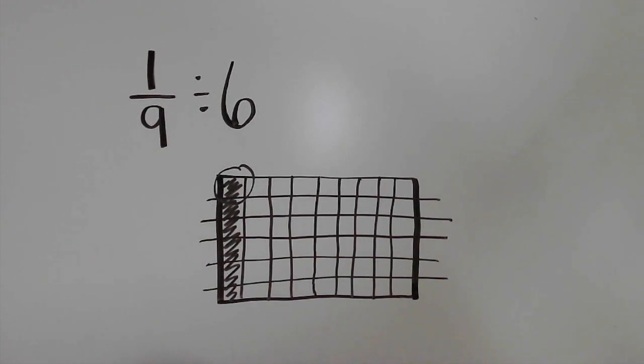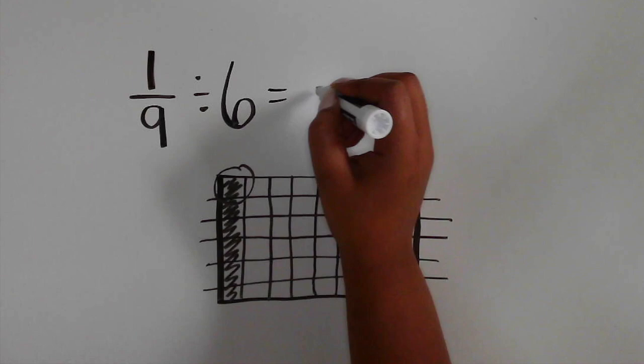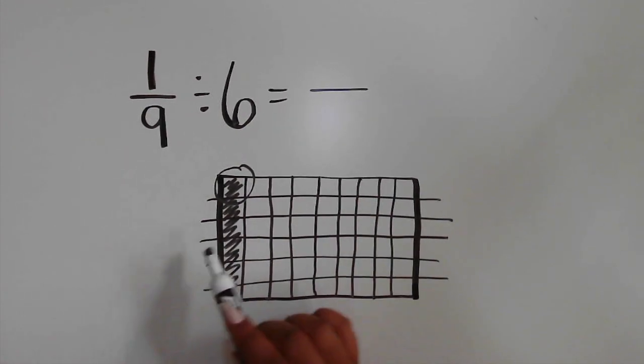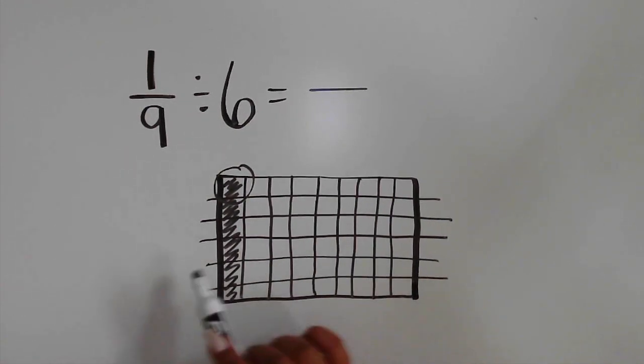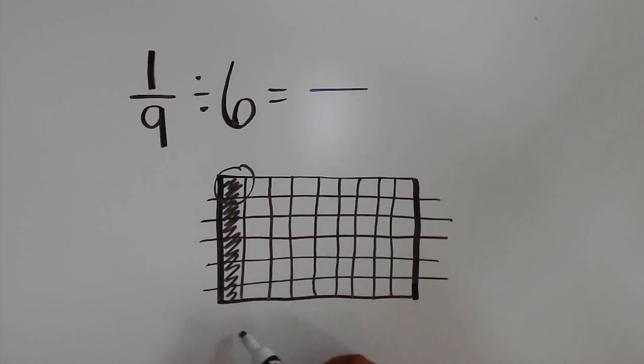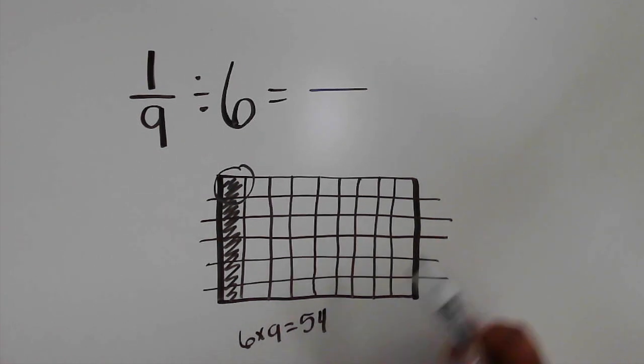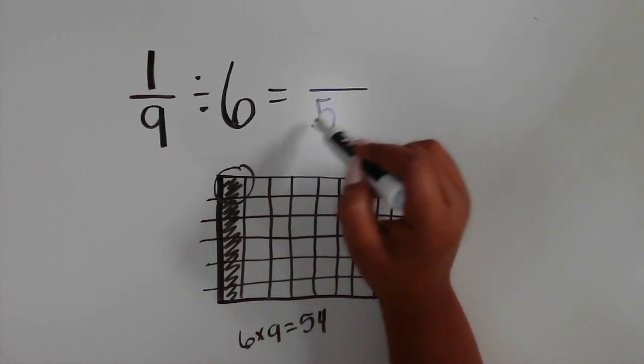Let's determine the total amount of parts in the whole. There are 6 parts in each column and 9 parts in each row, so you can multiply 6 times 9 to determine the total, which is 54. There are 54 total parts in the whole.